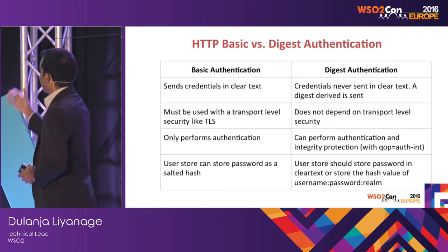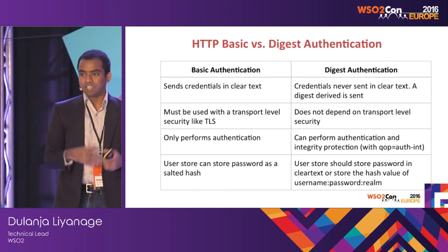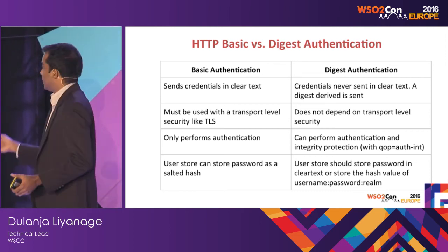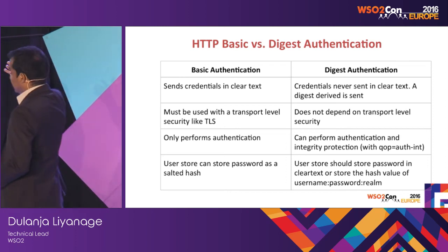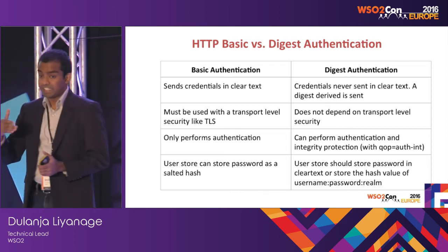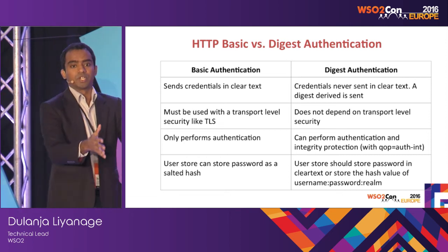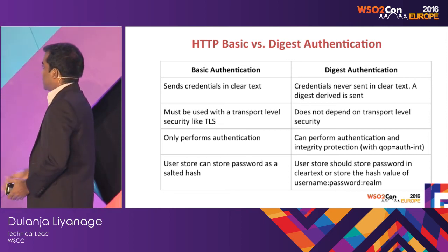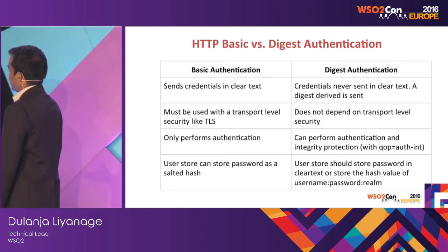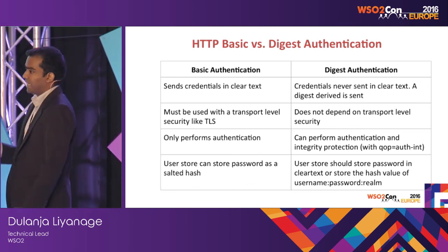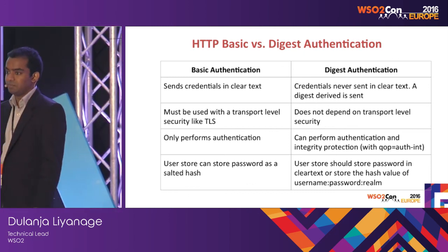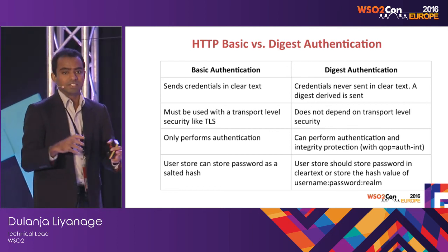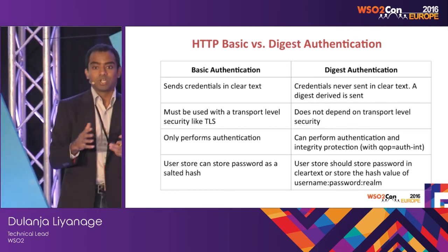There is a parameter called QOP — quality of protection — which you can send in digest auth. If it is set to 'auth-int', that means authenticate plus integrity protect, so it does both. When storing credentials, the password must be stored as a salted hash in your system. In digest auth systems, it is mainly stored in clear text, but you can rehash it.